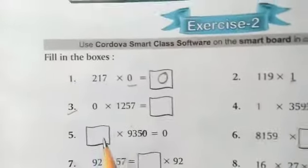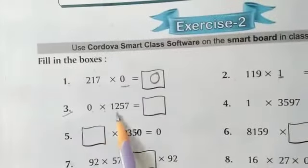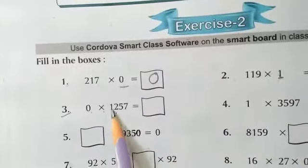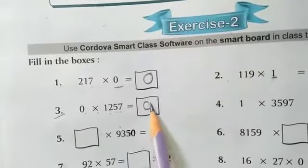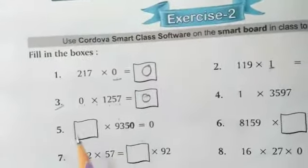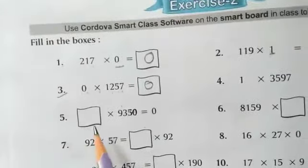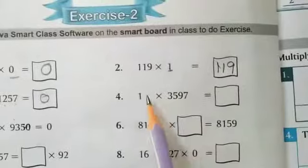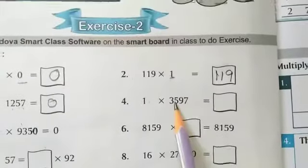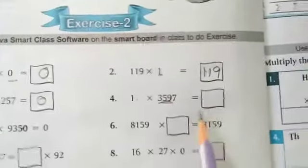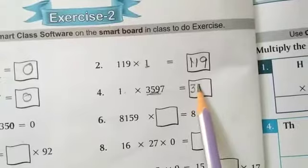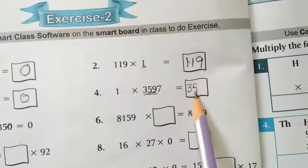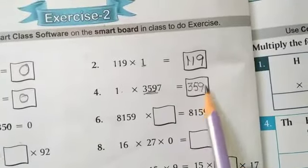Third question: 0 multiplied by 1257. The answer is 0. Fourth question: 1 multiplied by 3597. The answer is the same — 3597. When we multiply by 1, the answer is the same number.